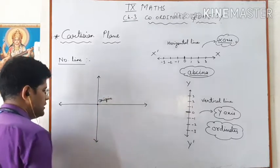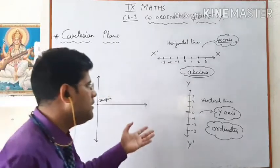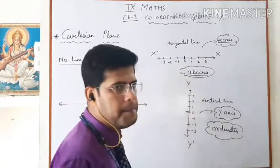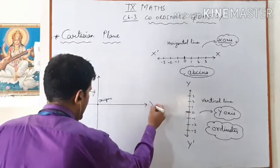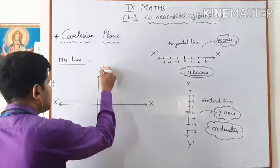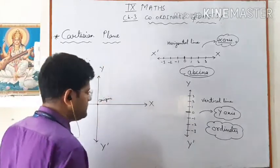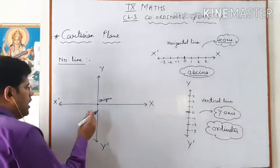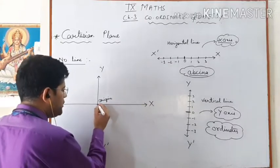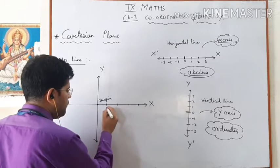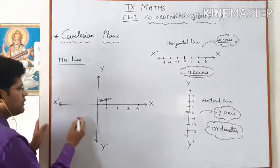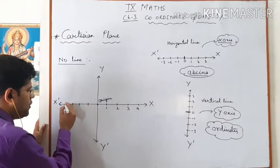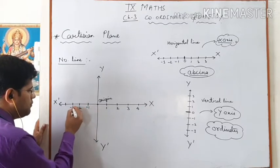In a number line we call zero the starting point, but when we talk about this Cartesian system, we name that coincided point — which is zero for both the x-axis and y-axis — as the origin. On the horizontal line from the origin, he took points 1, 2, 3, 4 with equal intervals. On the left hand of the horizontal line he took minus 1, minus 2, minus 3, minus 4.